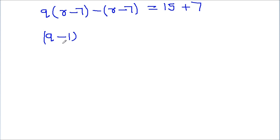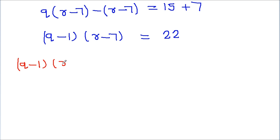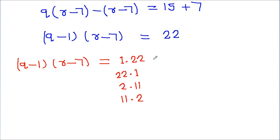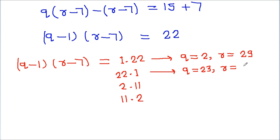We get (q - 1)(r - 7) = 22. We can write 22 as 1×22, 22×1, 2×11, or 11×2. From these, we get: q = 2, r = 29; or q = 23, r = 8; or q = 3, r = 18.